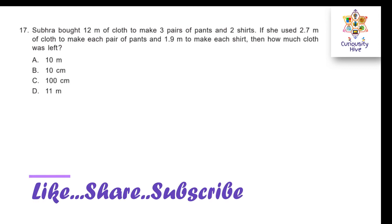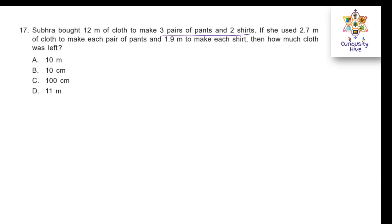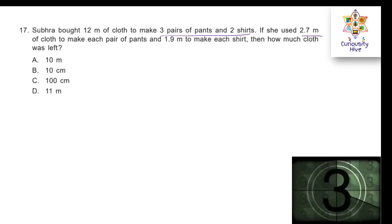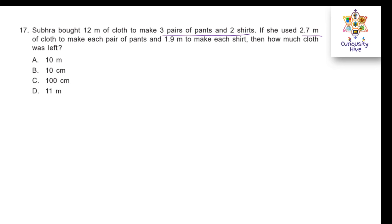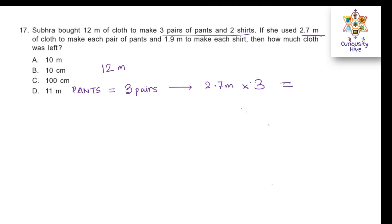Next question. Shubra bought 12 meters of cloth to make 3 pairs of pants and 2 shirts. She used 2.7 meters for each pair of pants and 1.9 meters for each shirt. How much cloth was left? She makes 3 pairs of pants using 2.7 times 3 meters: 3 times 7 is 21, carry 2; 3 times 2 is 6 plus 2 is 8. So 8.1 meters for pants.